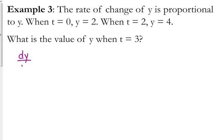The rate of change of y with respect to time is proportional to y, so we've got dy over dt is equal to k times y.